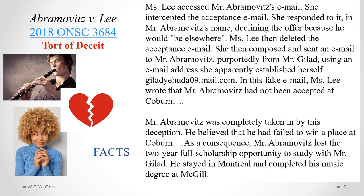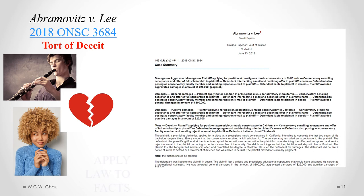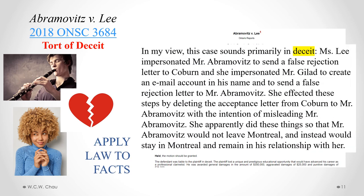Eric stayed in Montreal at McGill and completed his music degree. Eventually he found out about the deception and sued Jennifer. The court found that there was a tort of deceit: Jennifer had impersonated Eric to send a false rejection letter to Colburn, impersonated Mr. Galad to create an email in his name and send a false rejection letter to Eric, and deleted the acceptance letter — all with the intention of misleading Eric so that he would stay in Montreal and remain in his relationship with her.